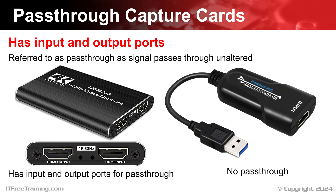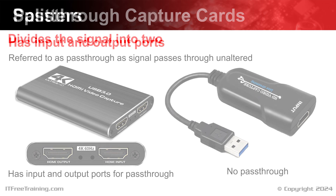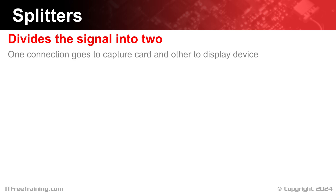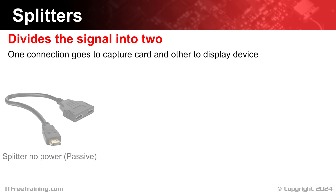In some cases, you may need to capture the video and also display it on a monitor. If your capture device does not have pass-through, there is another option: you can use a splitter. A splitter essentially divides the signal into two — one connection goes to the capture card and the other to your display device. There are a number of different types of splitters on the market. The most basic and cheapest is a passive splitter.